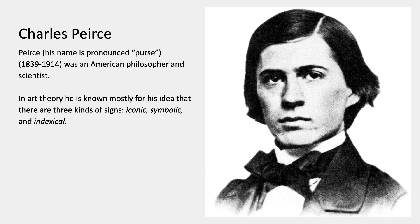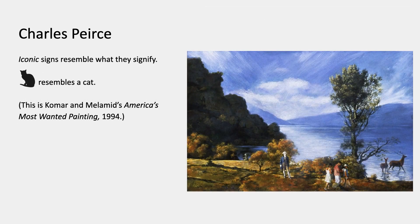Charles Peirce — that's how his name is pronounced — was an American philosopher and scientist who developed a complicated theory of semiotics. In art theory, he's mostly known for his idea that there are three kinds of signs: iconic, symbolic, and indexical. Iconic signs resemble what they signify — that silhouette resembles a cat. That painting by Komar and Melamid, where they surveyed people to find their ideal painting and then painted something with all those things in it, is full of iconic signs. Realistic, naturalistic landscape painting is iconic: the tree looks like a tree, the lake looks like a lake.